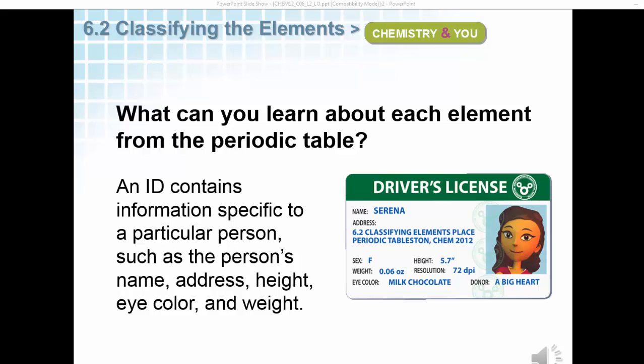What can you learn about each element from the periodic table? An ID contains information specific to a particular person, such as the person's name, address, height, eye color, and weight.